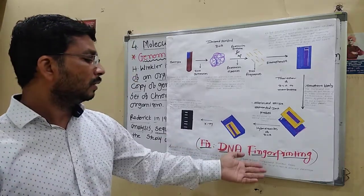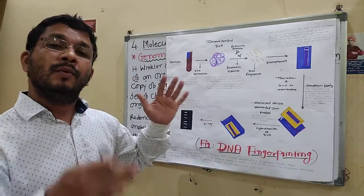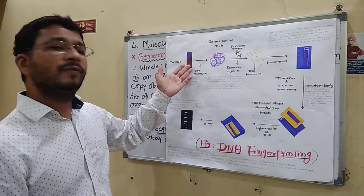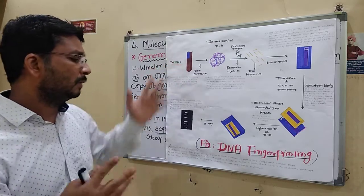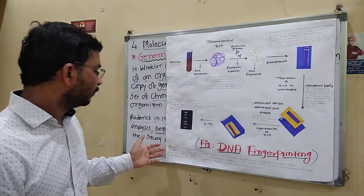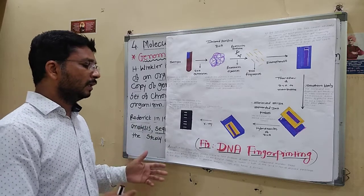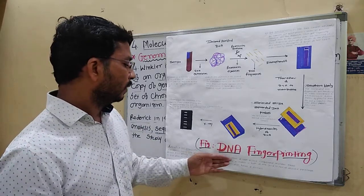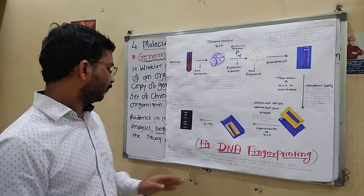DNA fingerprinting is used in rape cases and murder cases — they take a hair sample or blood sample from the crime scene and use that to solve criminal problems.